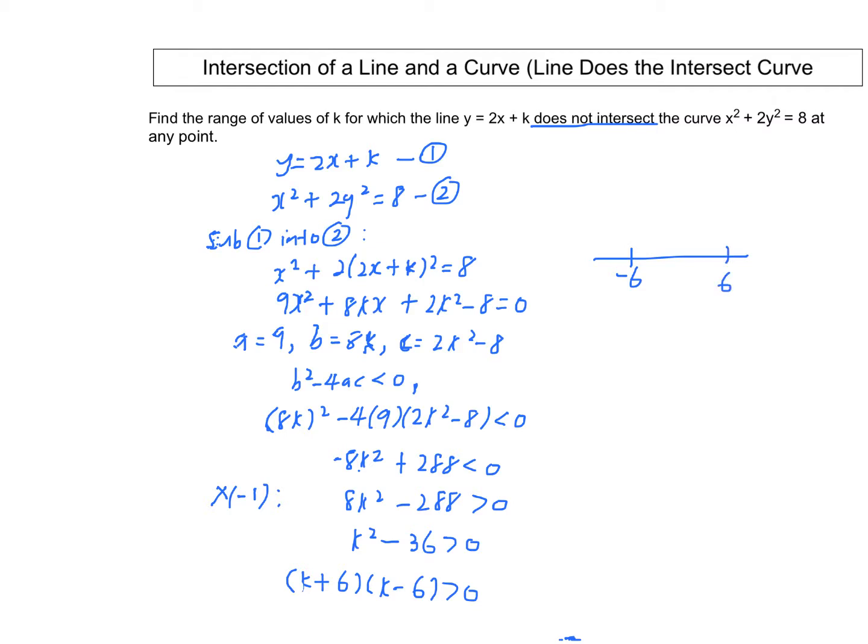Since the coefficient of k² is positive, this is a parabola opening upward. When we substitute any value greater than 6, the expression is positive. When we substitute any number between -6 and 6, we get a negative value. And when we substitute any number less than -6, we get a positive value.